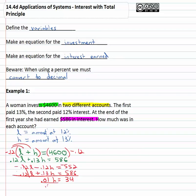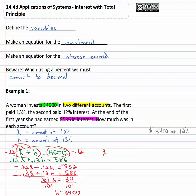To get H alone, we divide both sides by point oh one, and H equals thirty-four hundred. So thirty-four hundred dollars is invested at the higher interest rate. Now we just need to find L. Going back to the first equation: L plus thirty-four hundred equals forty-six hundred. Subtract thirty-four hundred from both sides and L equals twelve hundred dollars.